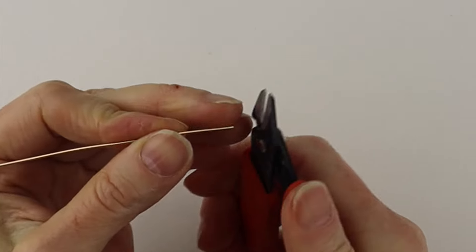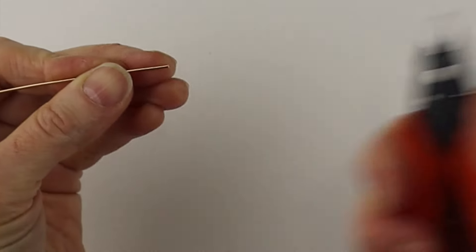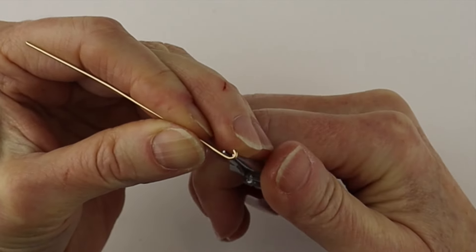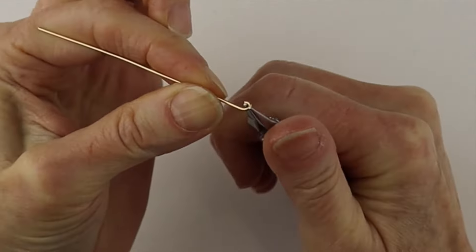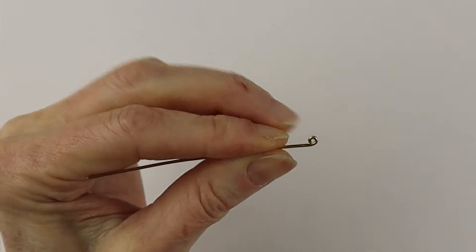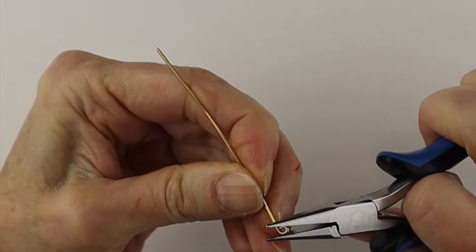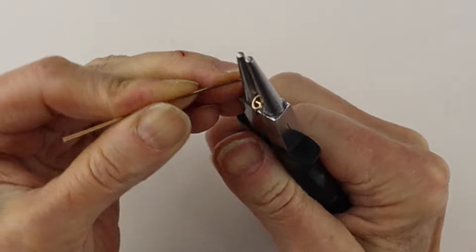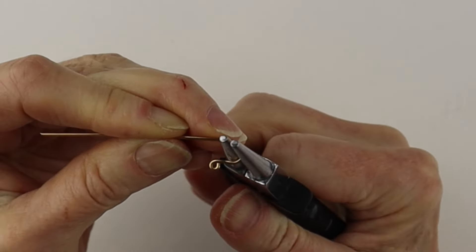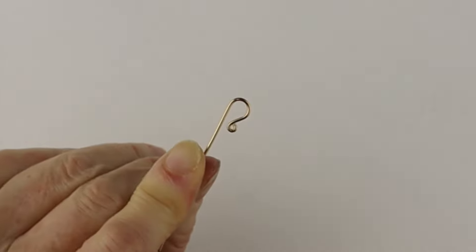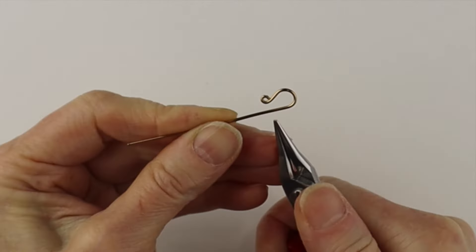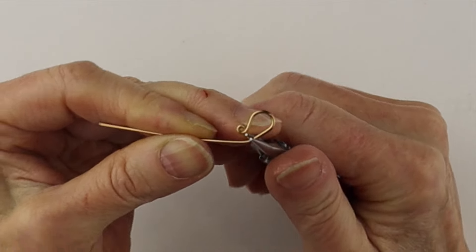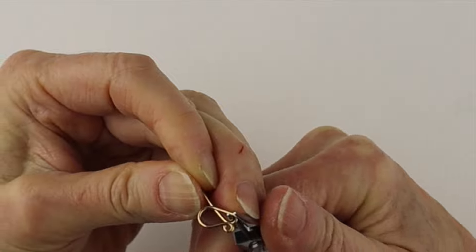For the hook, we'll just clip that flush. I'm just going to do a very small loop at the end, just around there. You can make sure it's closed. Get your larger round pliers and bring this one around, whatever size you want.